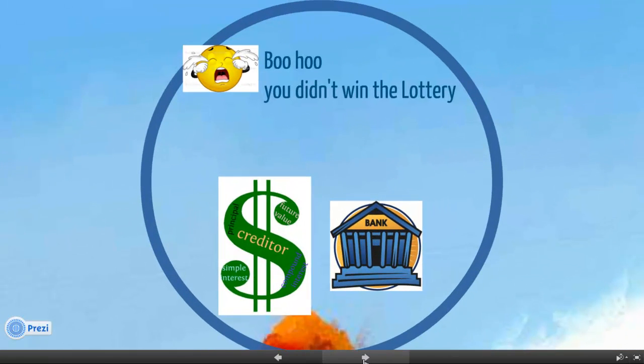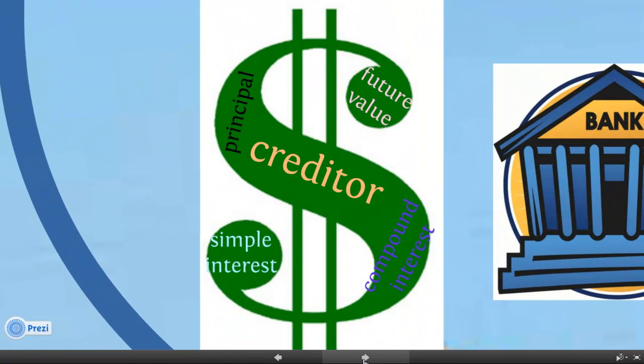Well, I'm sorry to report they had the draw and you didn't win. So now what are you going to do? You'll have to go to the bank and apply for a loan. We'll look at what this means, what all these terms mean, and also take a look at the fine print.